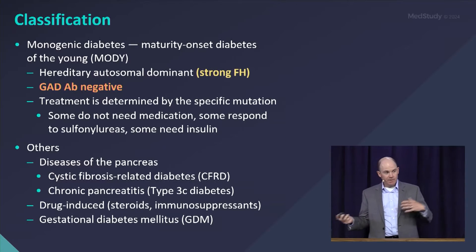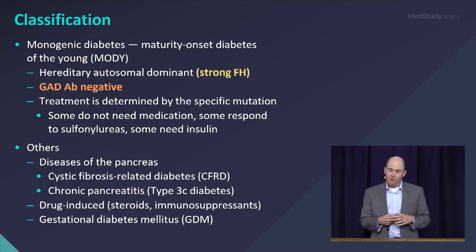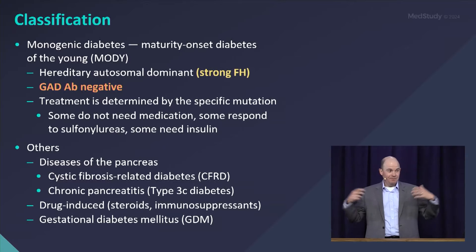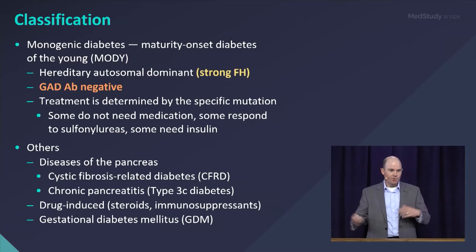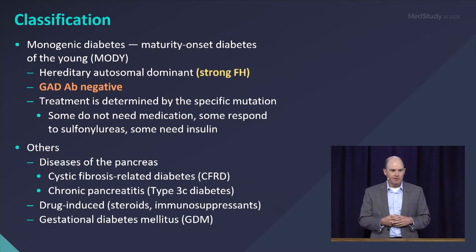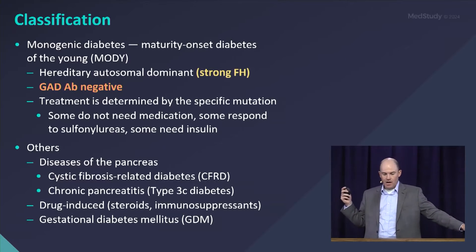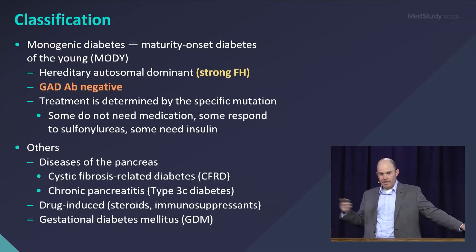Monogenic diabetes was formerly known as MODY — maturity onset diabetes of the young. There are now at least 50 different genes, and more are being discovered, that cause this hereditary form of diabetes. Most of these are autosomal dominant. These patients typically present at a younger age, similar to type 1, and often won't have signs of insulin resistance.